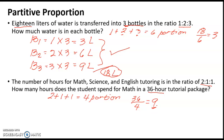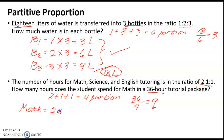For the math subject, the ratio is 2, so 2 times 9 equals 18. The student will spend 18 hours for math.